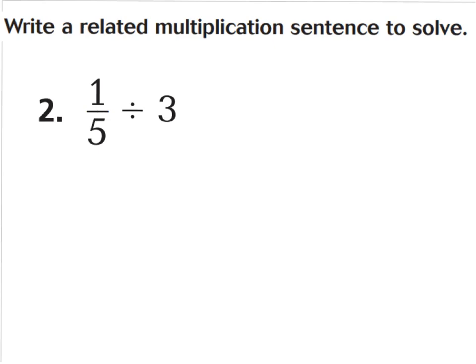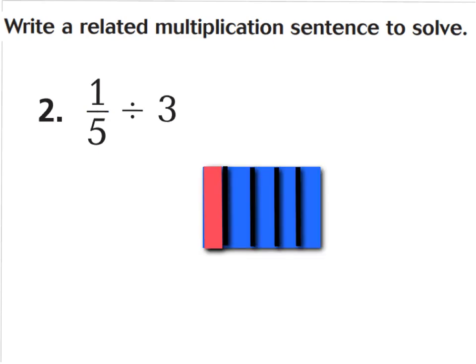Now let's take a look at question two. It says one-fifth divided by three. That's like saying if you had one-fifth of a whole and you want to share it with three people, what fraction would each person get of that one whole? Now in this model that you see here, I have one-fifth shaded in pink. Now if I were to divide this one-fifth into three parts, what would be the answer of one-fifth divided by three? Let's find out by dividing this one-fifth into three parts.